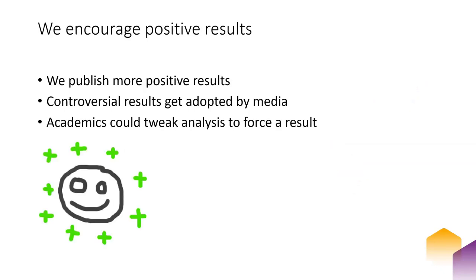Academia encourages positive results despite the huge value of negative ones. A positive result is obviously more likely to be published, and this is well documented. A positive or controversial result is more likely to be adopted by mainstream media. Without pressure to make methods reproducible, academics can tweak their analysis to force the discovery of a positive or controversial result in a particular sample.